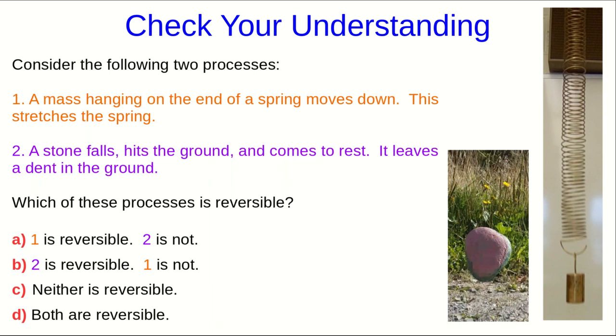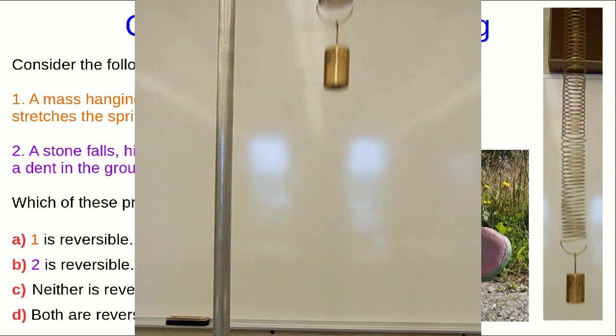So if we look at the mass on the end of the spring, played backwards, it looks perfectly reasonable. If I just play a longer video of that mass on the end of the spring, it moves down and up and down and up, and the upward parts look just like the downward parts played backwards.